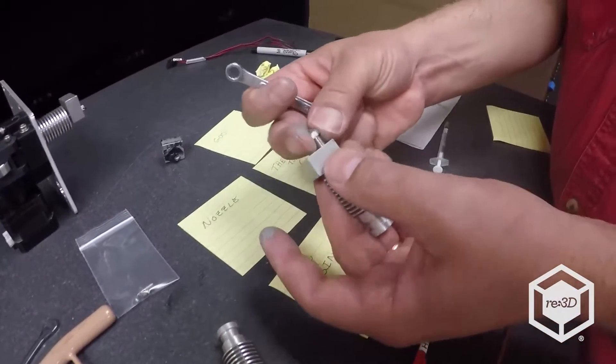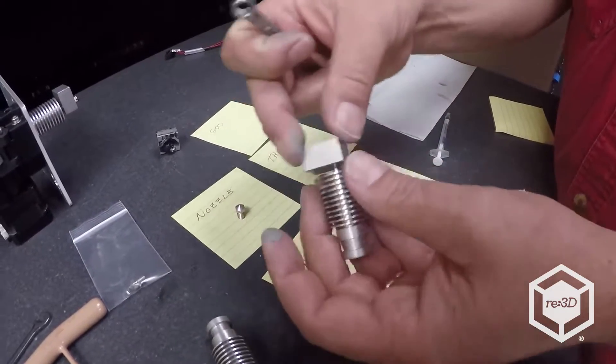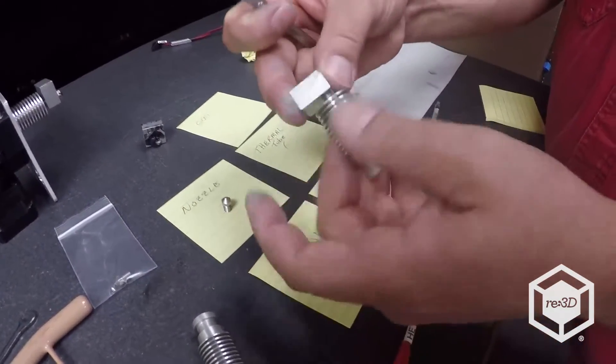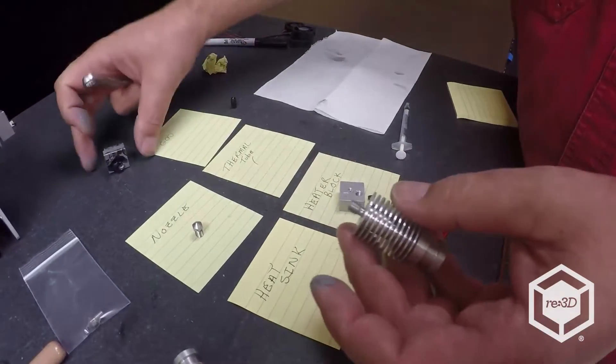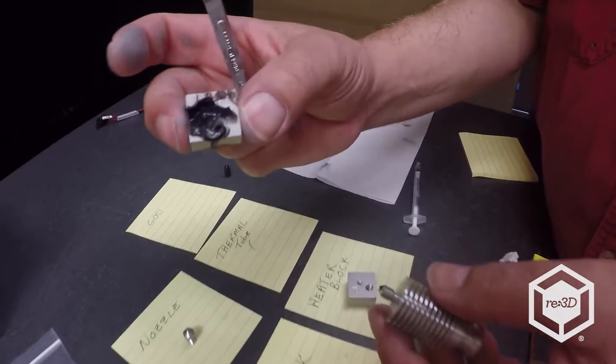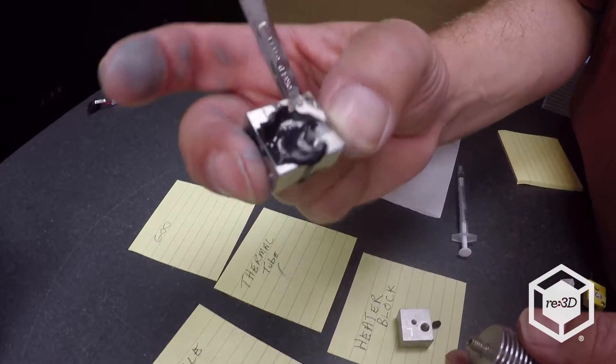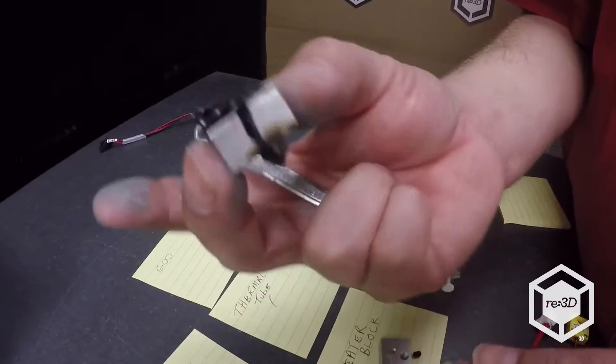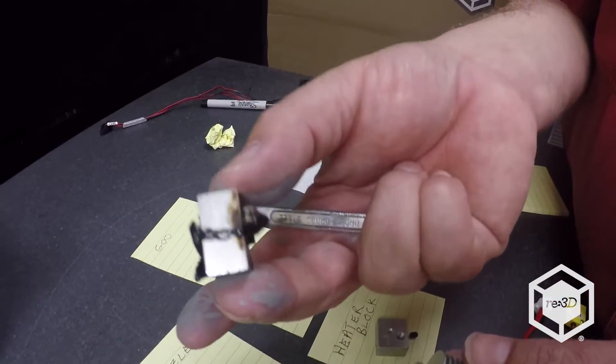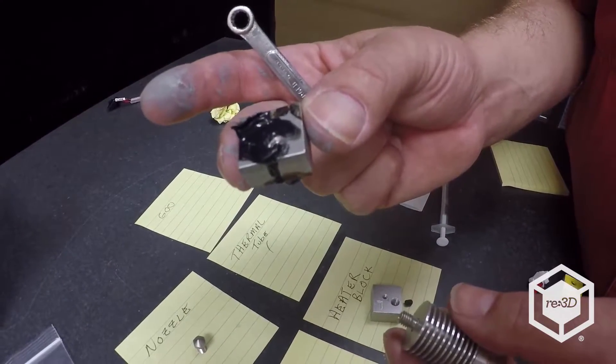Once you get the nozzle off it's a matter of just unscrew the heater block. What we've seen in the past is that sometimes you'll have a little error with your print and everything turns to goo. And so you'll want to take that apart and clean it up.